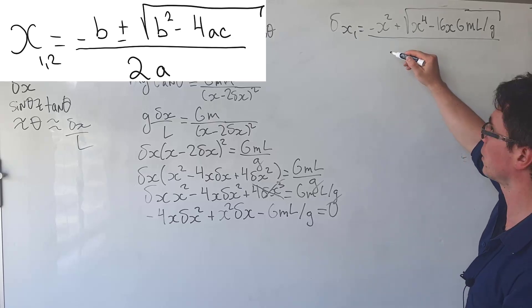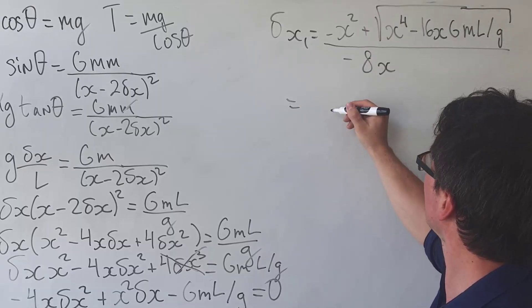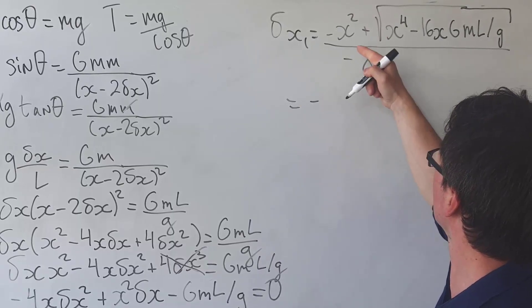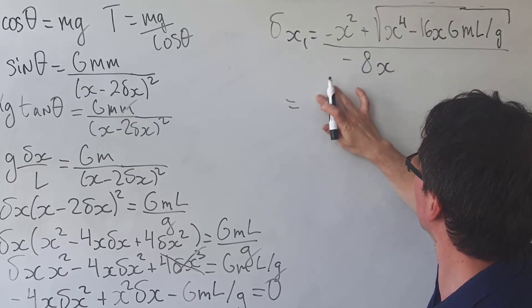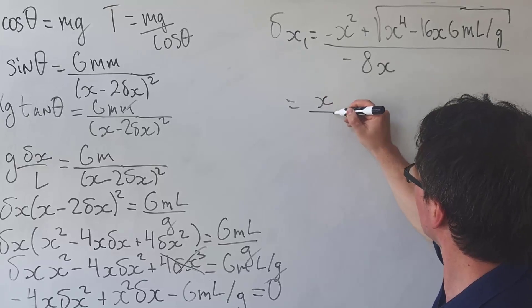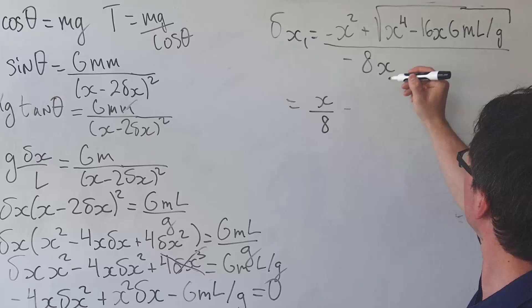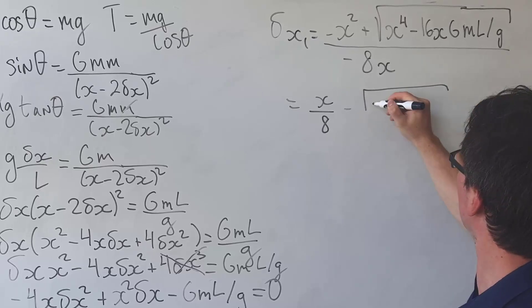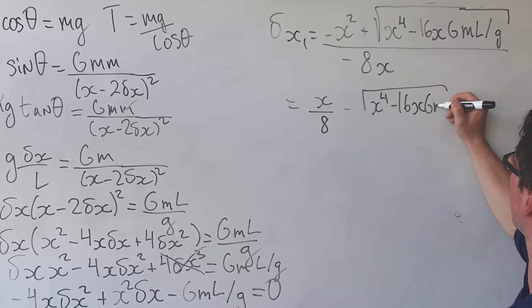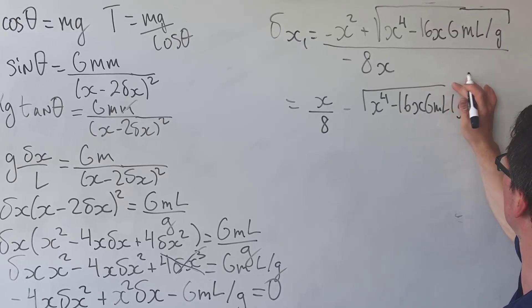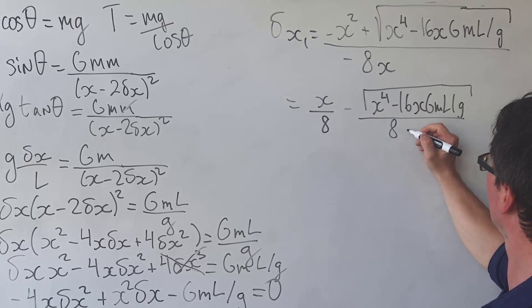So this in terms will equal to minus x squared over 8x will just give me a plus x over 8 and then take away the square root of x to power of 4 minus 16x gml over g divided by 8x.